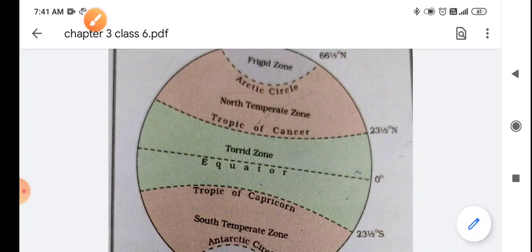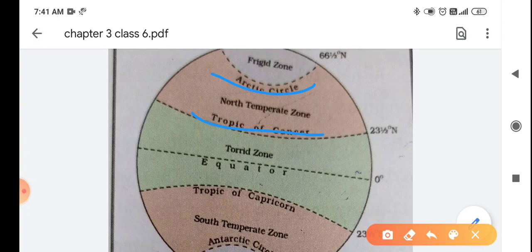And the area between Tropic of Cancer and Arctic Circle is this area. This is Temperate Zone.